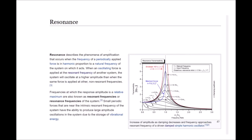Resonance. Resonance describes the phenomena of amplification that occurs when the frequency of a periodically applied force is in harmonic proportion to a natural frequency of the system on which it acts. When an oscillating force is applied at the resonant frequency of another system, the system will oscillate at a higher amplitude than when the same force is applied at other non-resonant frequencies. Frequencies at which the response amplitude is a relative maximum are also known as resonant frequencies, or resonance frequencies, of the system.